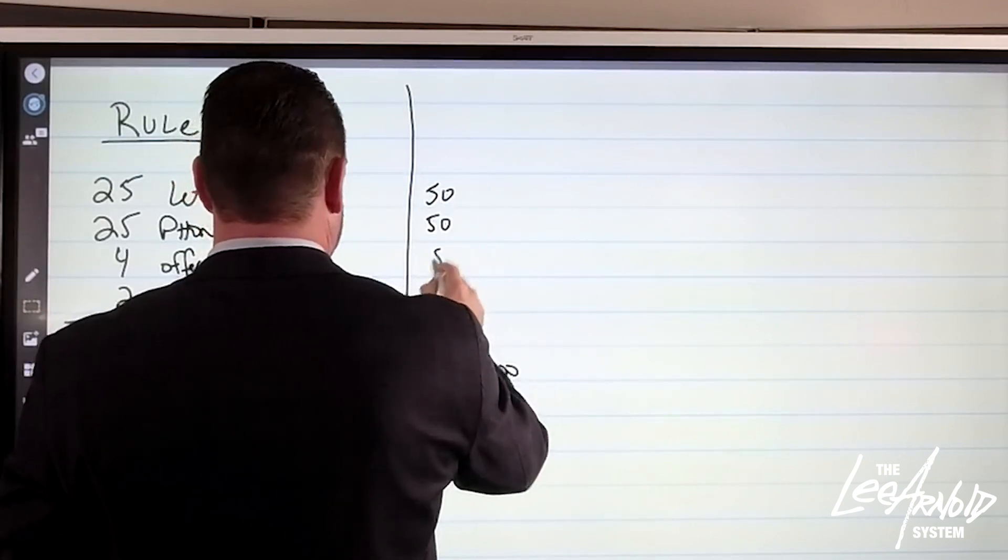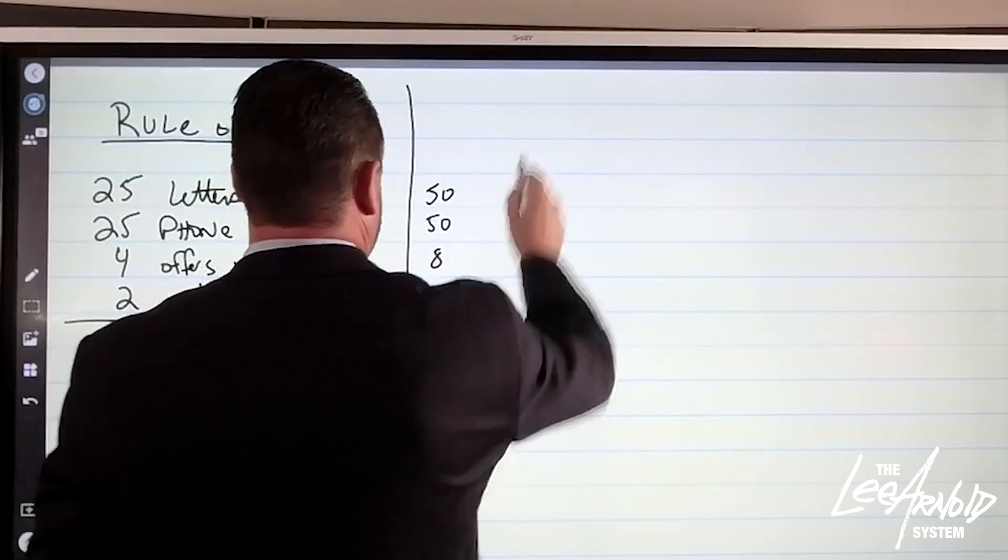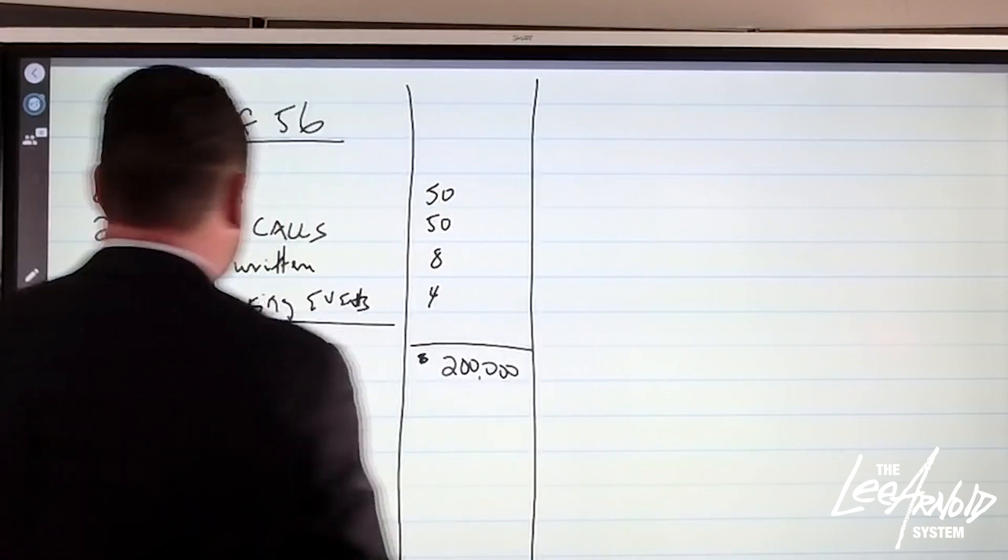We're going to make 250 phone calls, 8 offers and 4 networking events. If you do those functions, you get to 200,000.